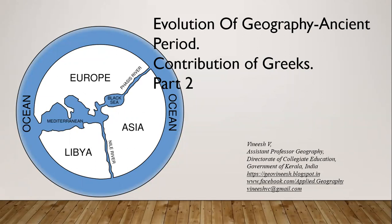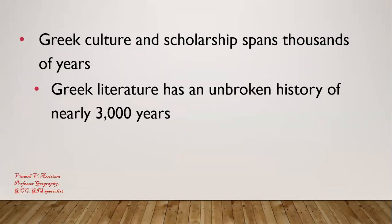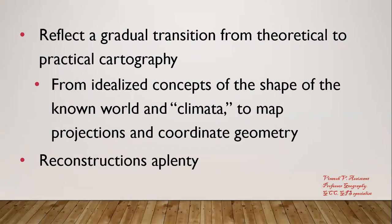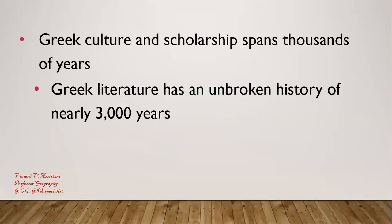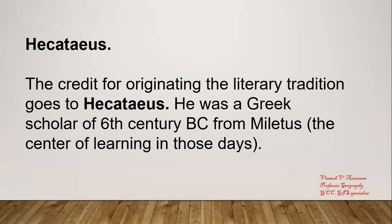Greek culture and scholarship spans thousands of years. Greek literature has an unbroken history of nearly three thousand years, reflecting a gradual transition from theoretical to practical cartography — from idealized concepts of the shape of the known world and 'climata' to map projections and coordinate geometry. We already discussed this. Now, Hecataeus — the father of geography.